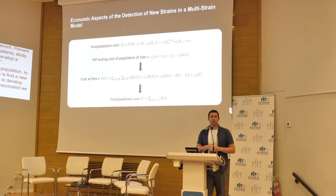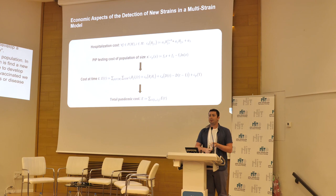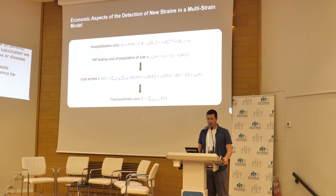We also model the economy. Merging the two ideas: first, the hospitalization cost — if people get sick you need to treat them, and treating people costs money. Second, when you sample the population you spend money on tests, operations, and other resources. These can be summarized in equations. The cost at time t looks like a specific formula, and the total cost is the sum across all time points — giving us an economic objective to minimize.